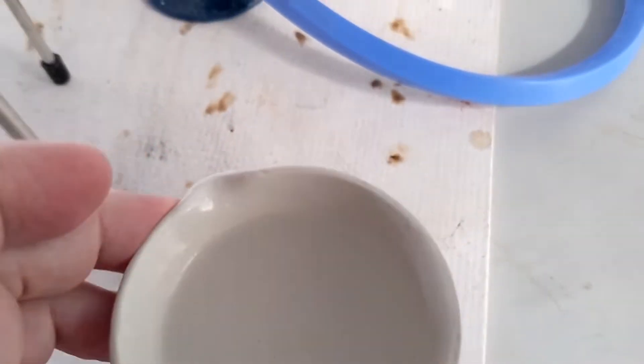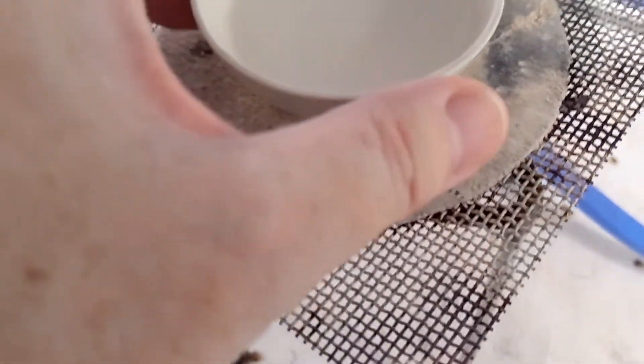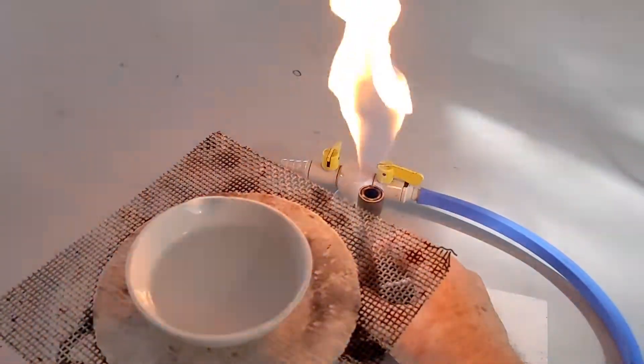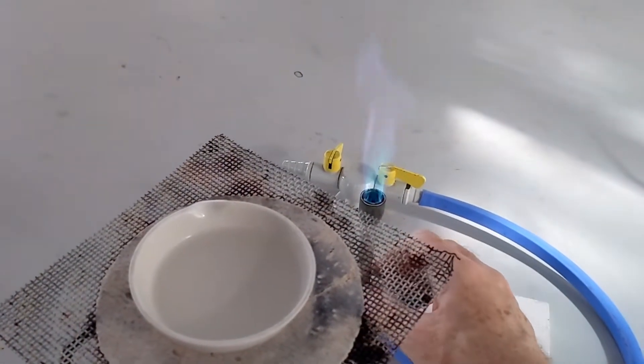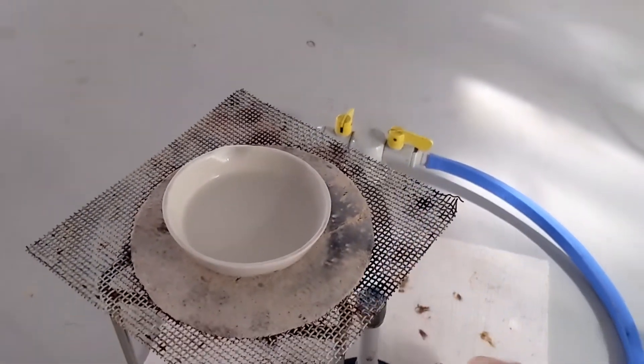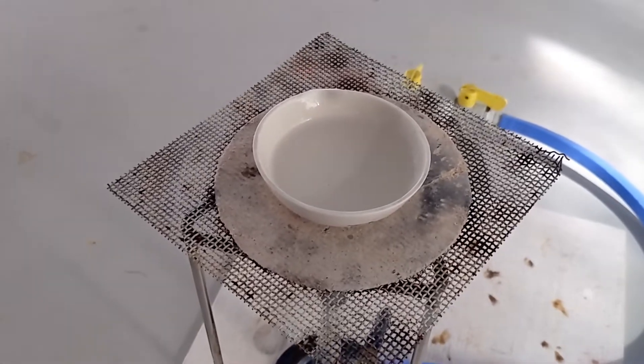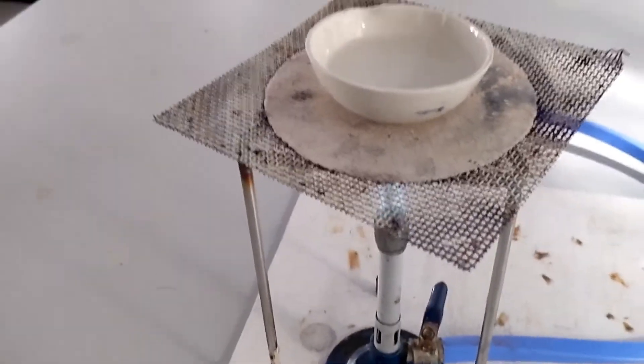We then need to heat our evaporating basin using a low Bunsen burner flame until crystals just start to form around the edge. Again, this will take some time.